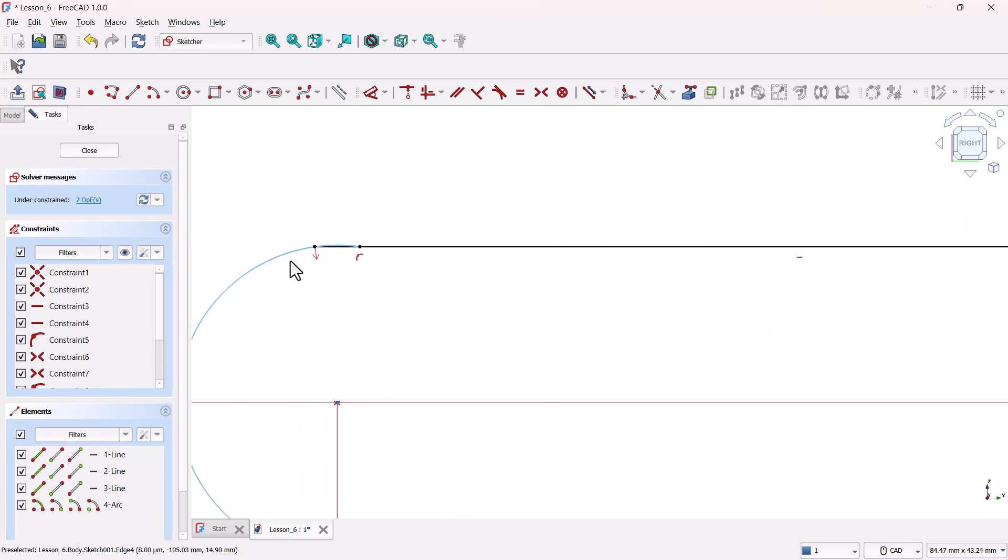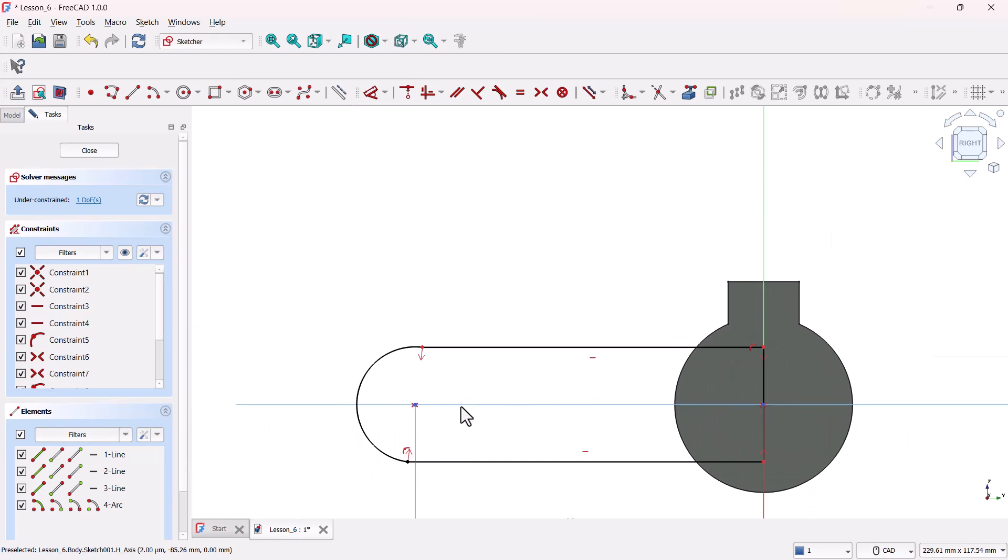Next up, these two points here, they need to be coincident. So hold Ctrl, select both points, and apply the coincident constraint. Now, these three points should be in a straight line. So hold Ctrl, select these three points, and select the vertical constraint tool.